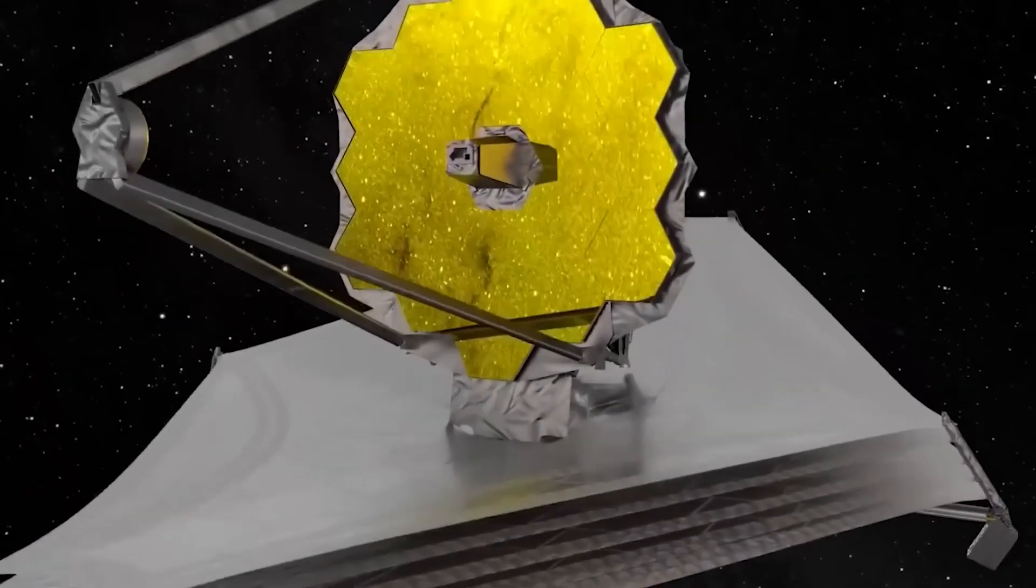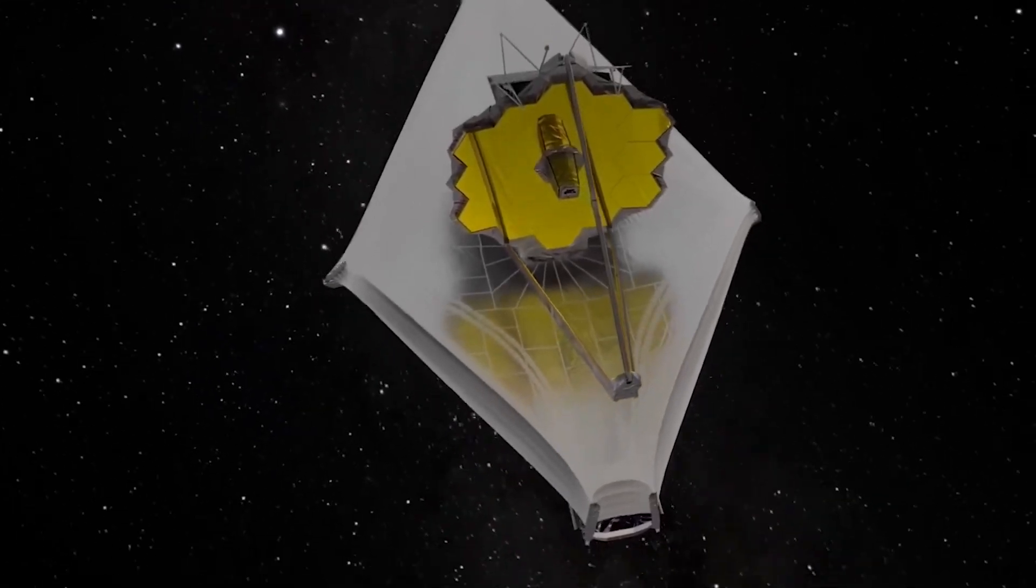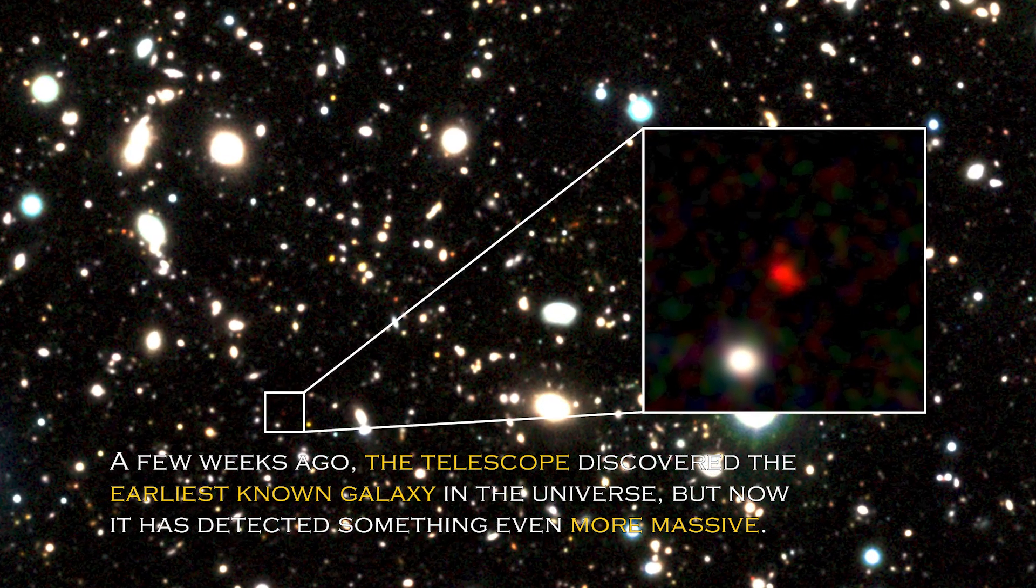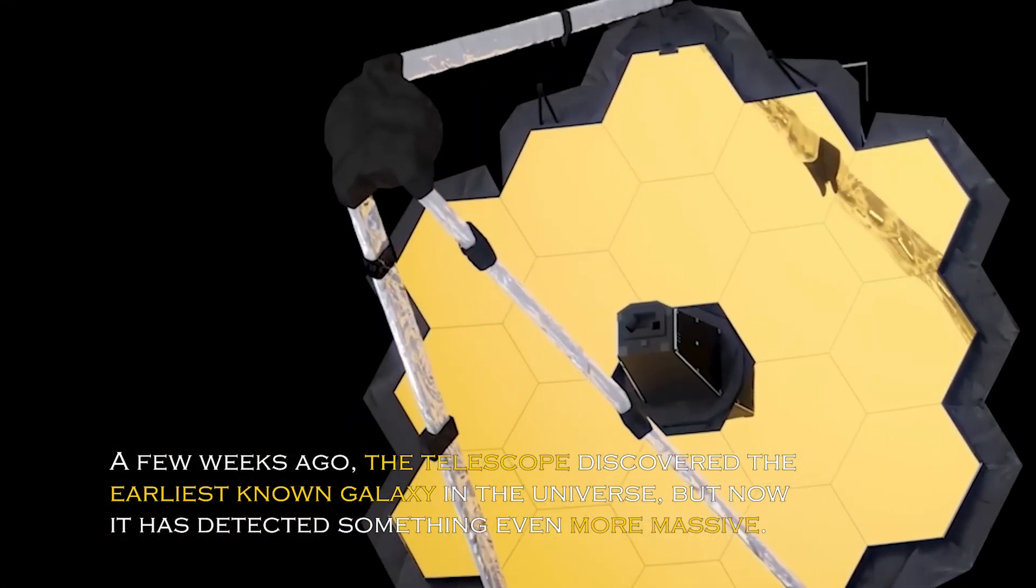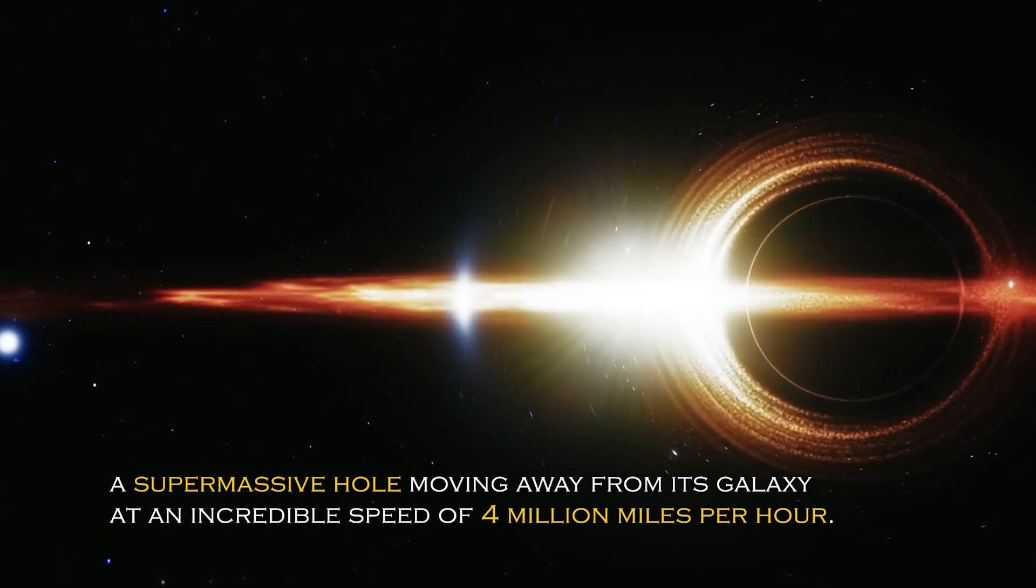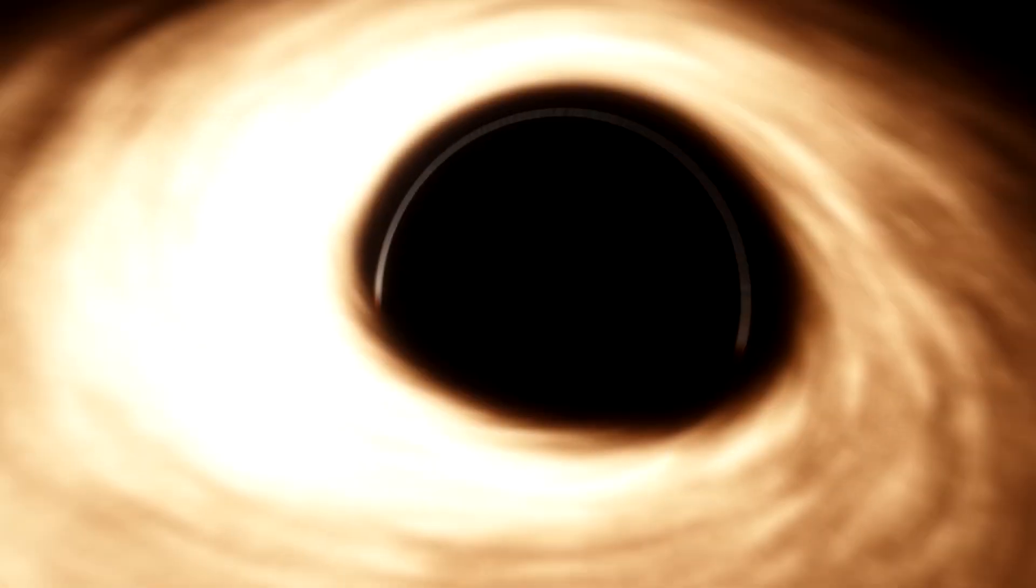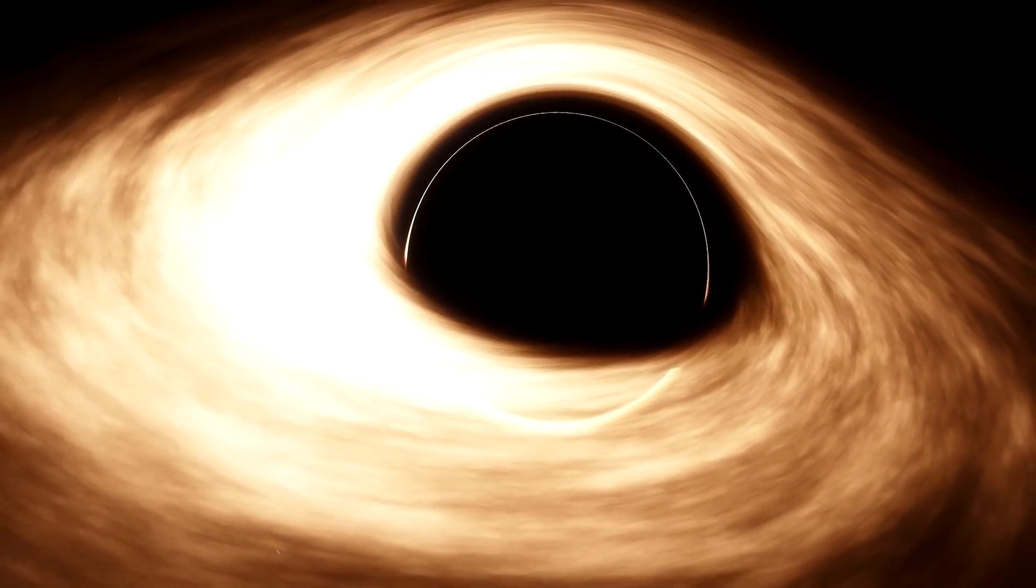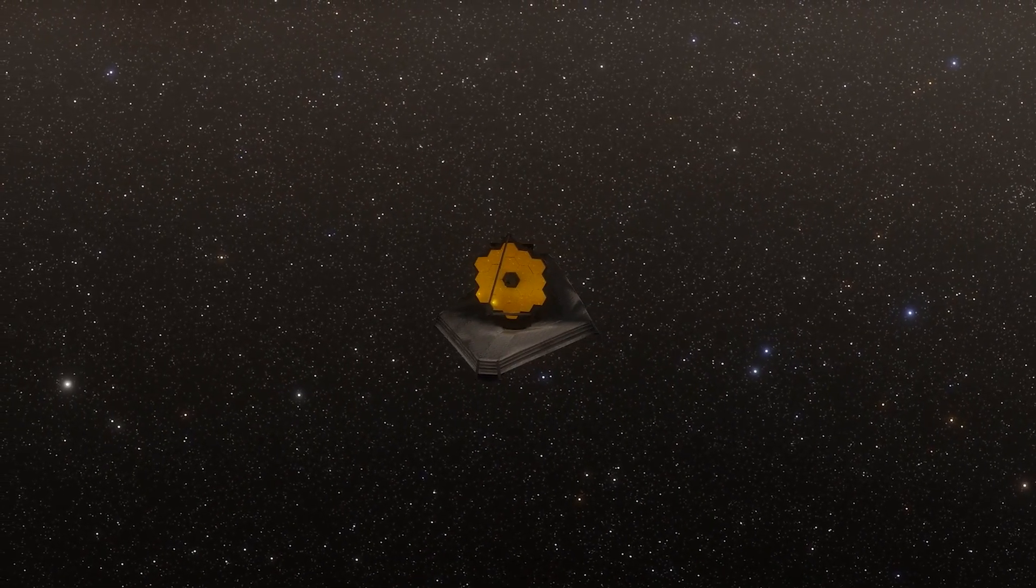In a surprising turn of events, NASA's James Webb Space Telescope has made a discovery that has astronomers around the world in awe. A few weeks ago, the telescope discovered the earliest known galaxy in the universe, but now it has detected something even more massive – a supermassive black hole moving away from its galaxy at an incredible speed of 4 million miles per hour. This discovery has very important implications and has generated much speculation among scientists and space enthusiasts about what it means for our understanding of the cosmos.